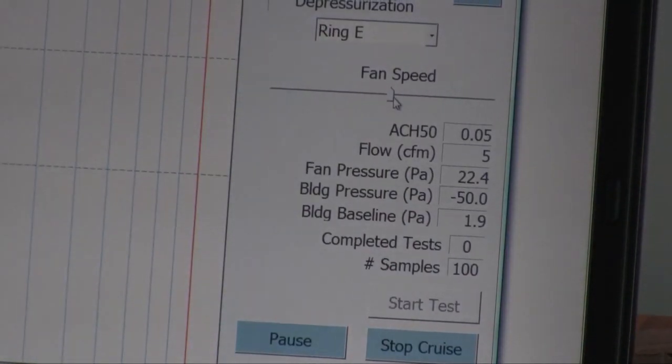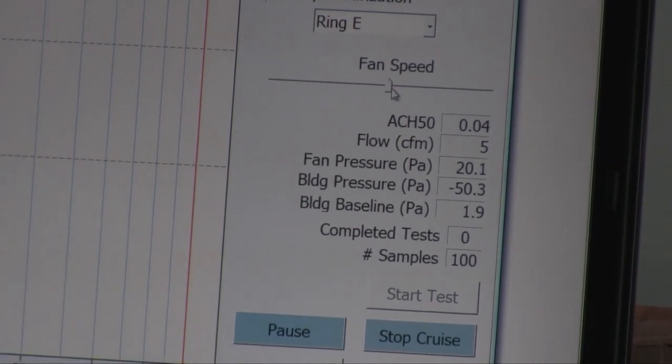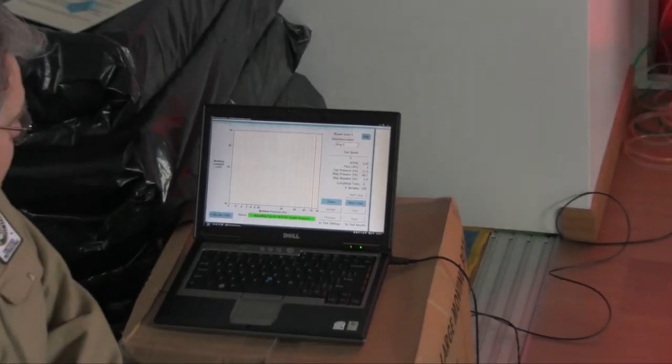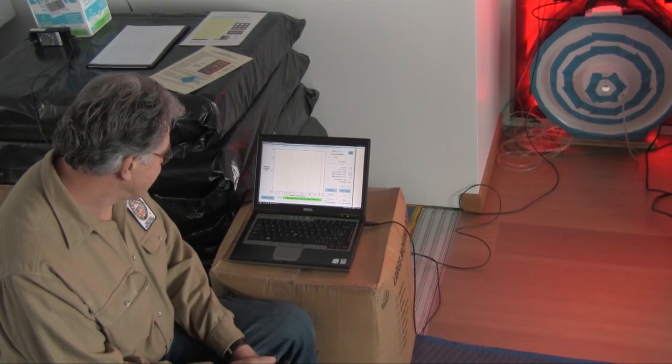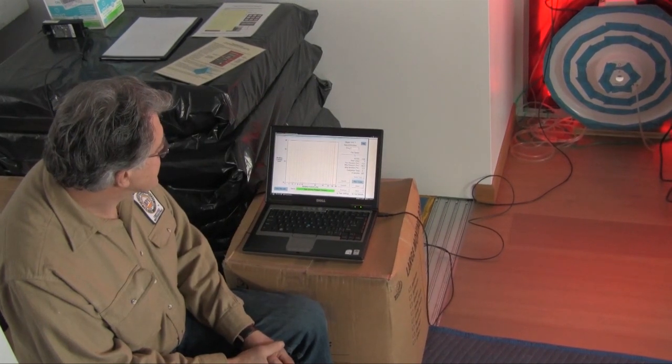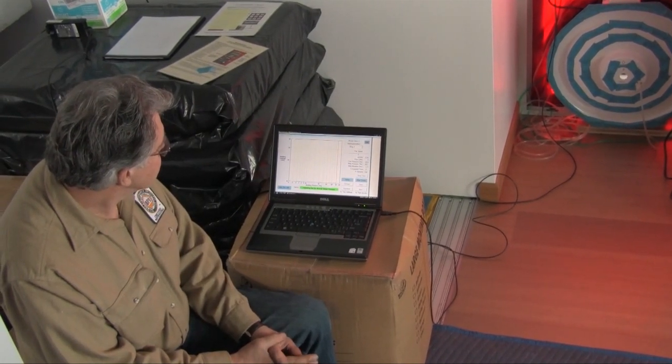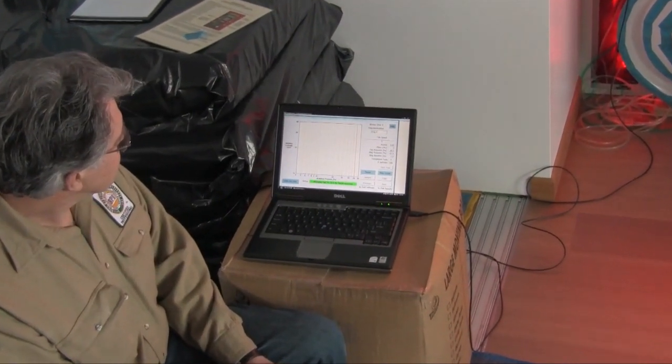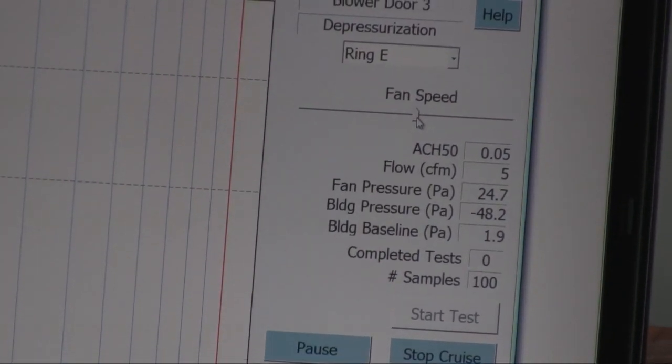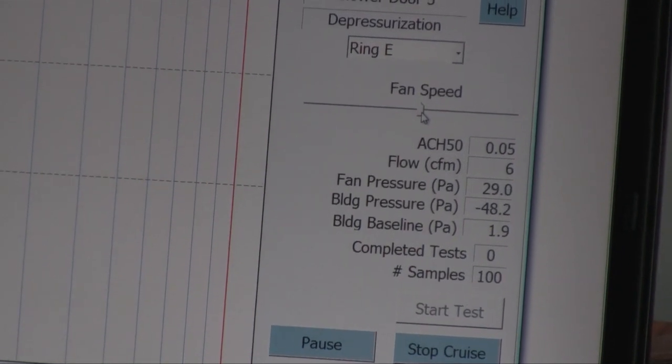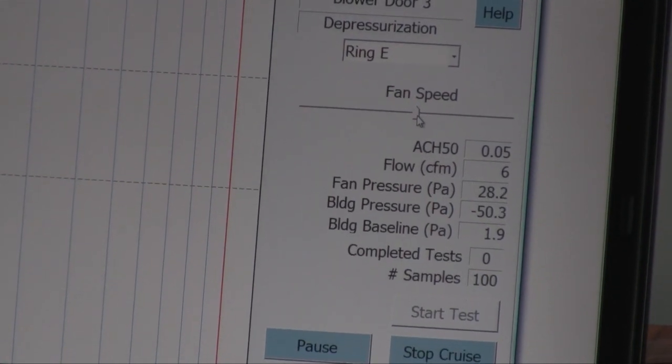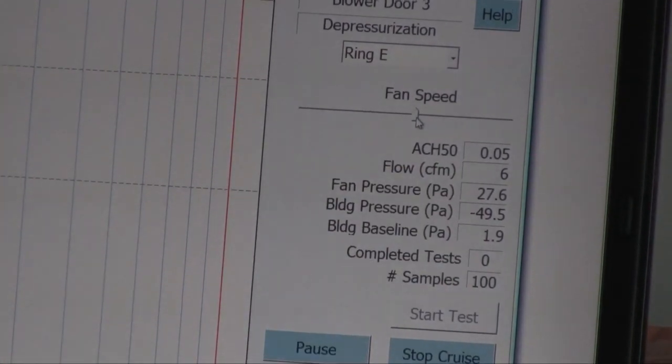Now all the air that goes out through that hole, the 5 cubic feet per minute, is all the air that is leaking in from all leaks everywhere in this house. That's not much. It will continue to search a little bit because there's a little bit of a breeze outside, which will vary things slightly. The fan flow jumped up to 6 cubic feet per minute.